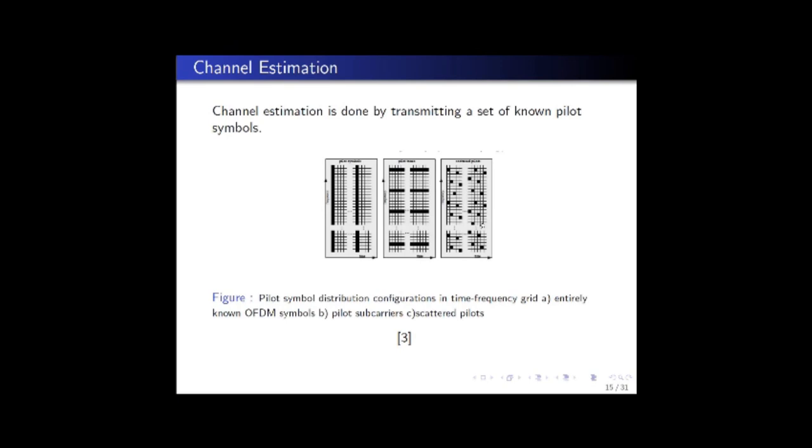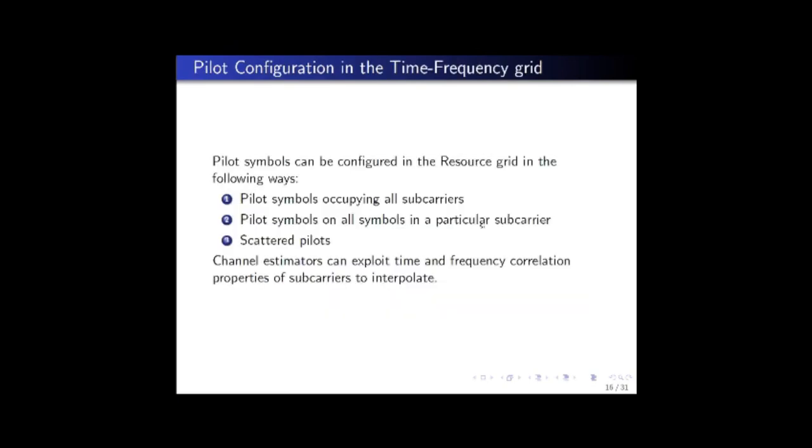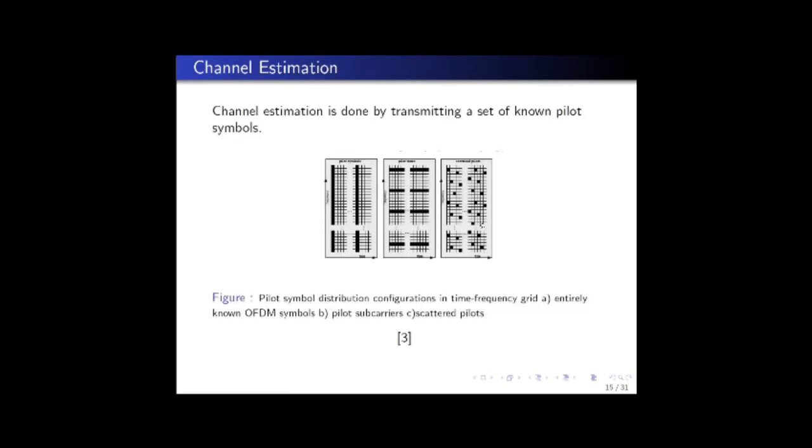The challenge here is to increase the number of pilot symbols because it gives you a better estimate of the channel. But at the same time, if you increase the number of pilot symbols then the actual transmitted data rate reduces. So it's a trade-off where you need to fix the number and positions of pilot symbols so that you can get an accurate estimate as much as possible.